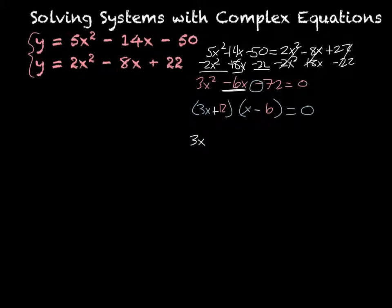So we have 3x + 12 equals 0, and x - 6 equals 0. So that means that x equals a negative 4, and x equals a positive 6.